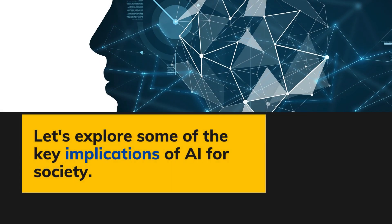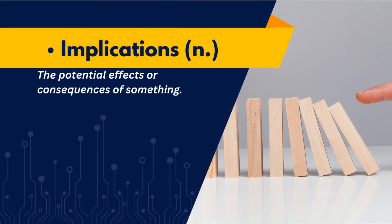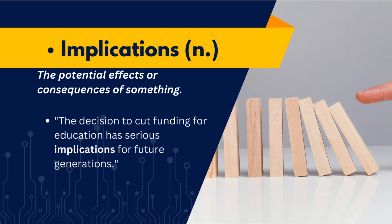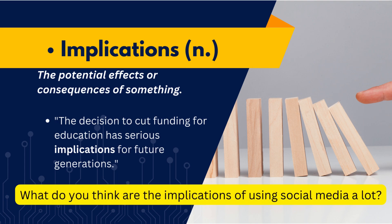Let's explore some of the key implications of AI for society. When we discuss the implications of a decision or event, we're talking about the potential effects or consequences it might have. For instance, if a government decides to cut funding for education, there could be serious implications for future generations, affecting their access to quality learning and opportunities. To practice using this word, try to answer the question: what do you think are the implications of using social media a lot?